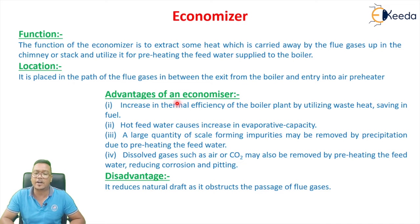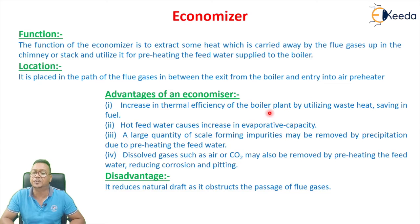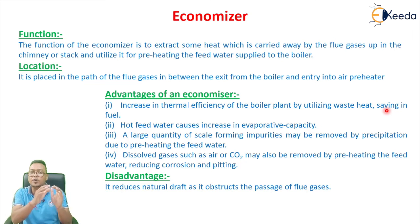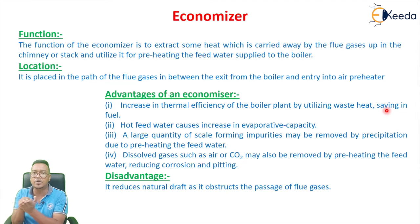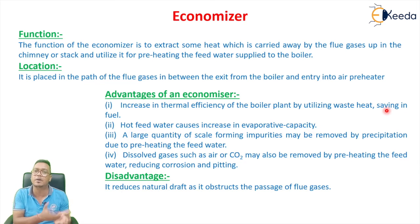What are the advantages of the economizer? Basically, the economizer increases the thermal efficiency of the boiler plant by utilizing waste heat — that means it is reducing losses, and if losses are reduced, efficiency will increase automatically.